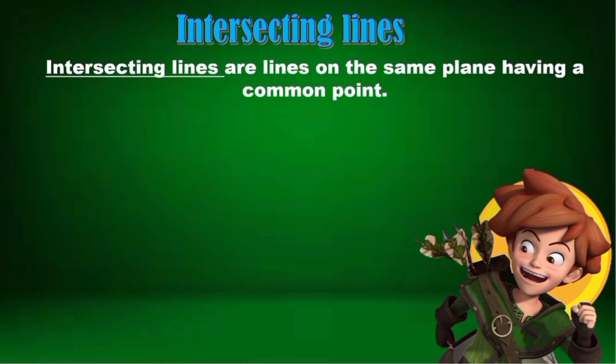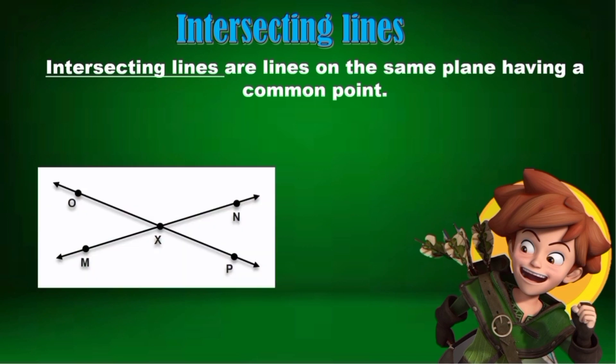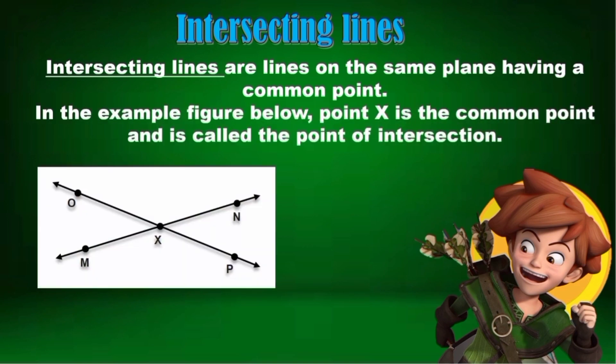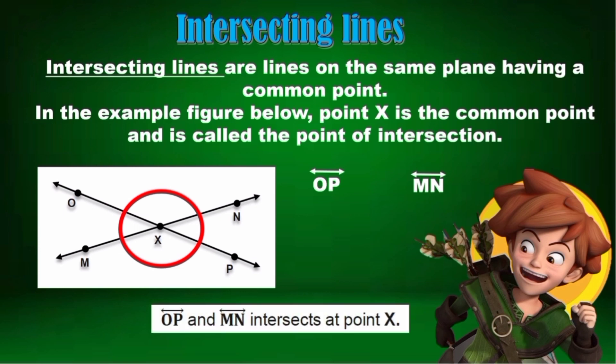Intersecting Lines. Intersecting Lines are lines on the same plane having a common point. Now, look at the illustration. In the example figure below, point X is the common point and is called the point of intersection. We have here line OP and line MN. Line OP and line MN intersect at point X.